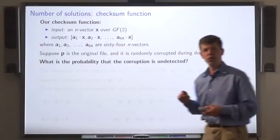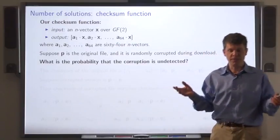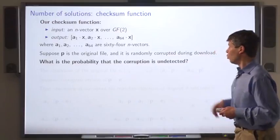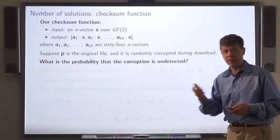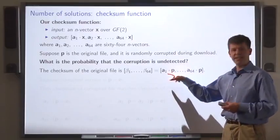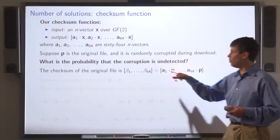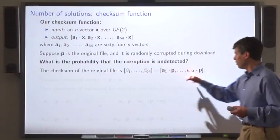Now let's use p to denote the original file, and say it is randomly corrupted during the download process. What's the probability that that corruption went undetected? Here's the checksum of the original file. The first bit is a1 dot p, and we'll denote that by beta 1, and so on.